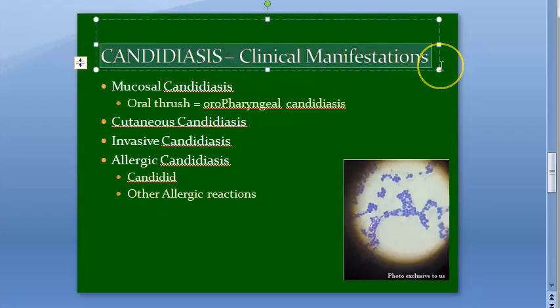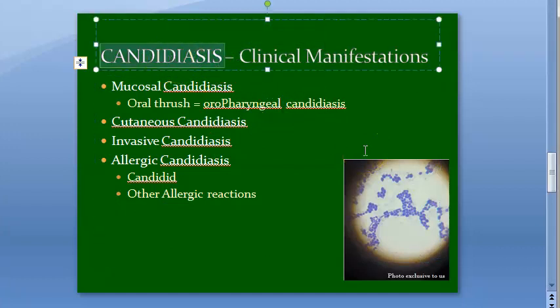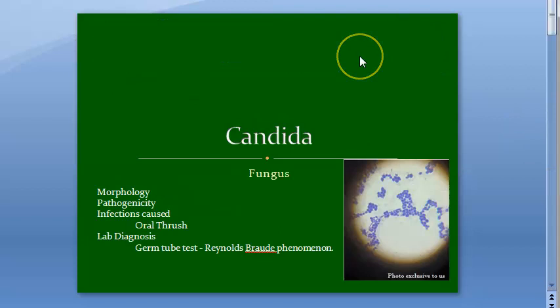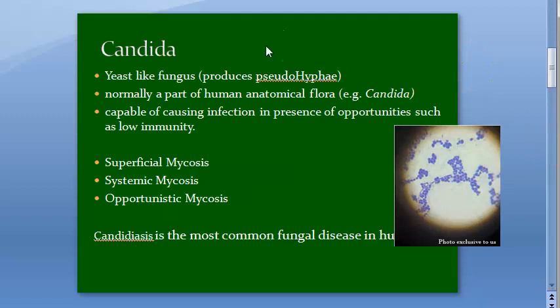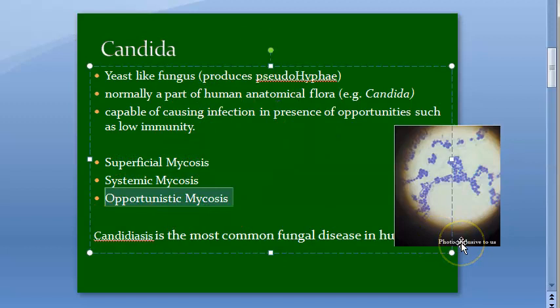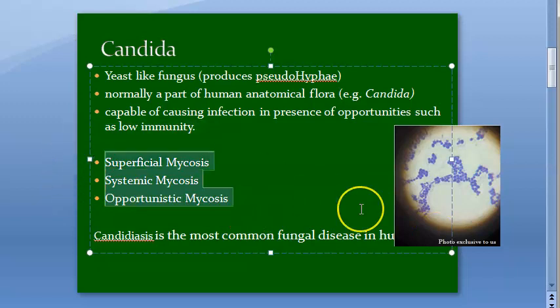In this video we will look at the clinical manifestations of candidiasis, a disease caused by the fungus Candida. Candida is normally present inside us as anatomical flora, but when there is low immunity it causes opportunistic infection. Any fungal disease is called mycosis, and Candida can cause superficial mycosis, systemic mycosis, and opportunistic mycosis.